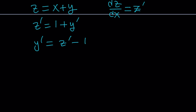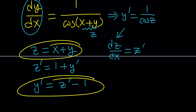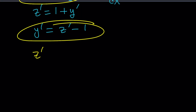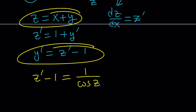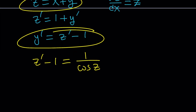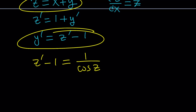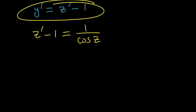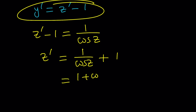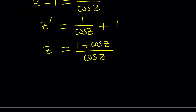We're going to do two substitutions. We already have y prime equals 1 over cosine of z, and y prime is going to be z prime minus 1. So z prime minus 1 equals 1 over cosine of z. Now we're going to isolate z prime, and this is going to become a separable differential equation. So z prime equals 1 over cosine of z plus 1.